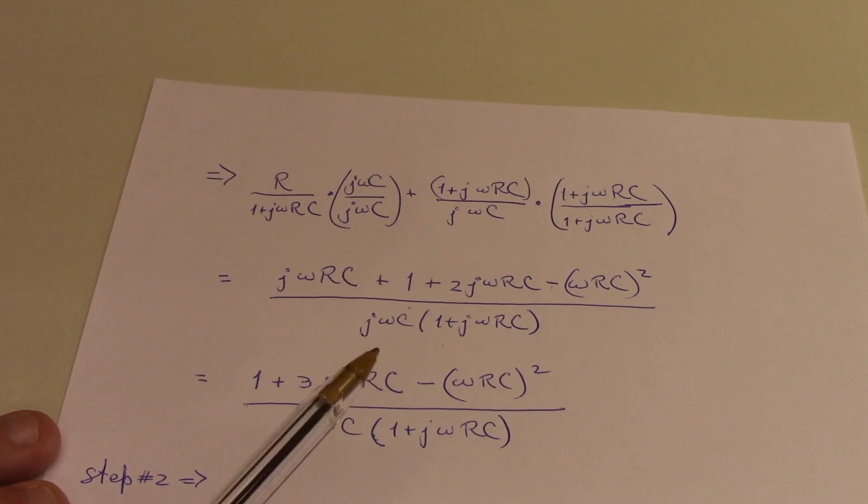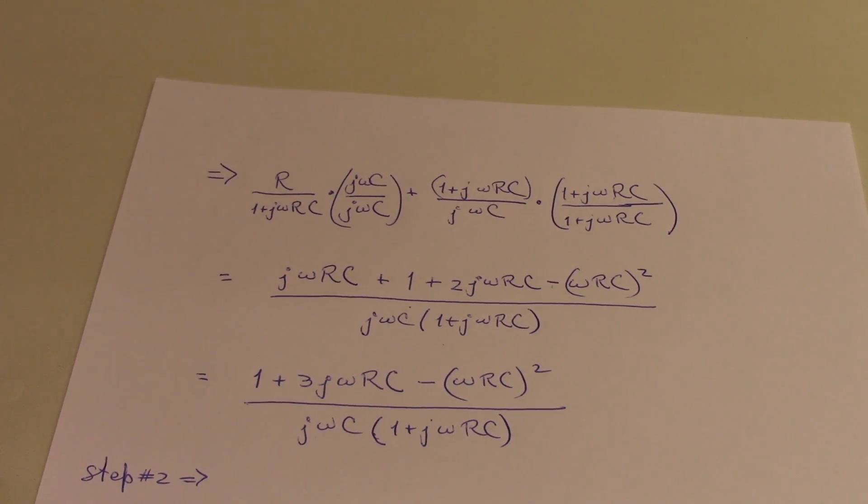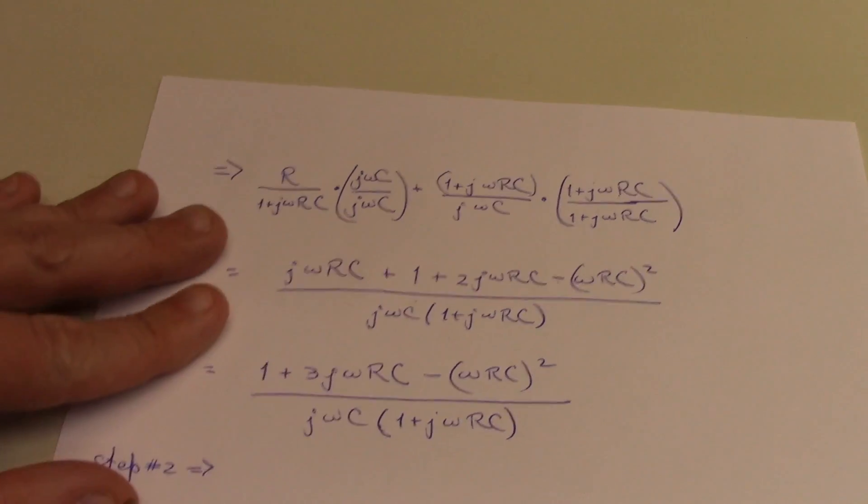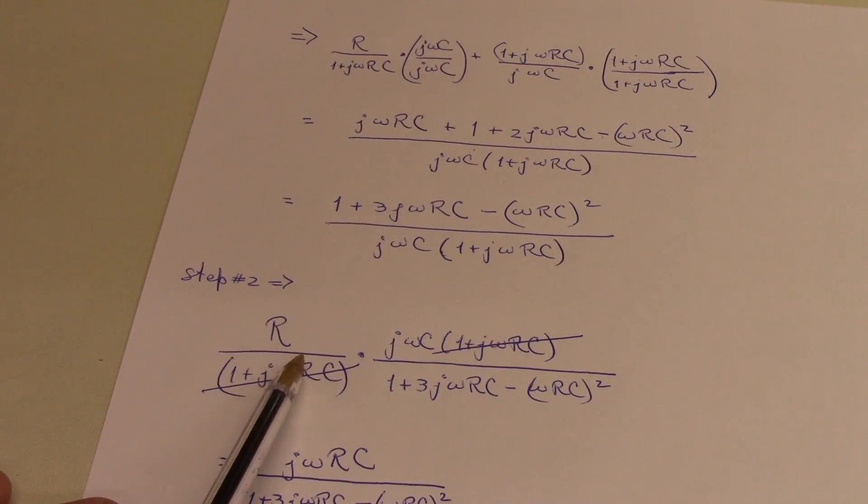So step 2 is invert and multiply in order to carry out the division. So the numerator that I'm working towards is just r over 1 plus j omega rc.